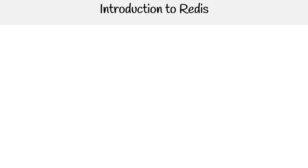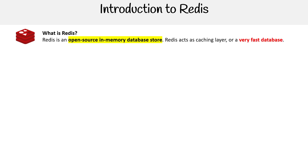Hey, this is Andrew Brown from ExamPro. We're taking a look at the introduction to Redis. So what is Redis? Redis is an open source in-memory database store, and it acts as a caching layer or a very fast database. It has a lot of utility, but those are the two most common uses.